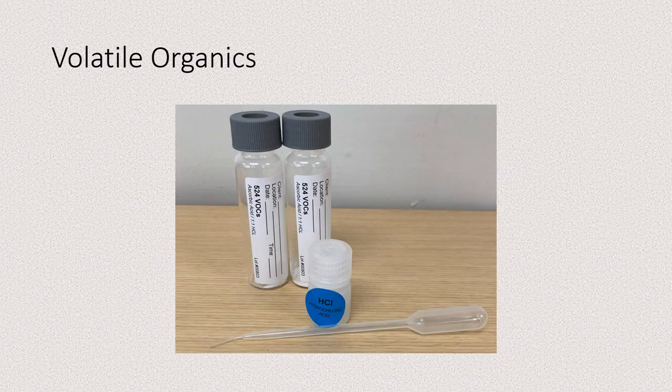Here's the kit you'll get for volatile organics — notice there are two bottles. We need the extra one in case one breaks or fails quality control parameters. Fill the bottles about three-quarters full. There's a medicine dropper and a small bottle of acid. When it's three-quarters full, put five drops of hydrochloric acid into it, then fill it the rest of the way and turn it upside down to check for headspace.